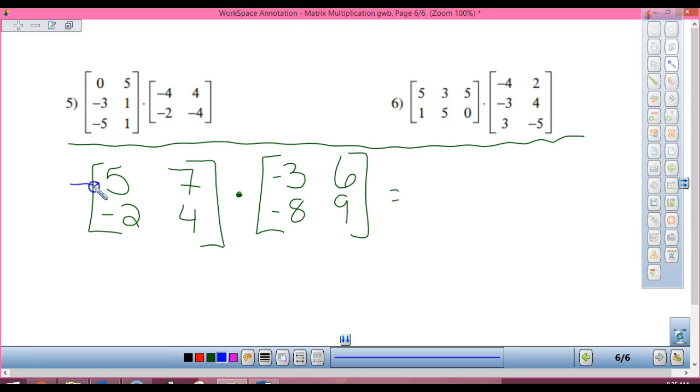All right. Top row, first column. Negative 15 plus negative 56. Okay, so now it's top row, second column. First numbers, 30, plus second numbers, negative 18. Use your calculator. 63.